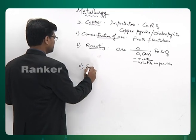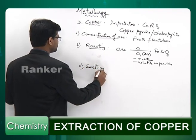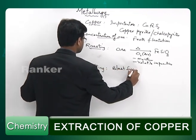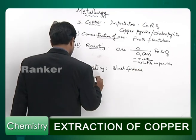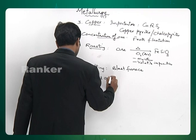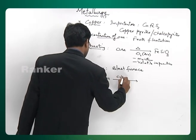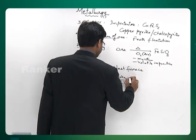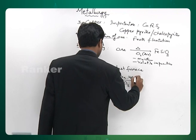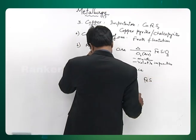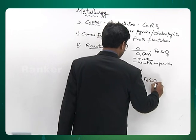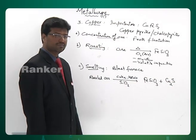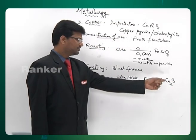The next step is smelting, done in a blast furnace. Here we take the roasted ore, add coke as fuel, add SiO₂, and blow hot air. Most of the Fe is removed as FeSiO₃ slag. As long as FeS is present, Cu₂S will not get oxidized to copper oxide — so you get rid of most of the Fe in this process.